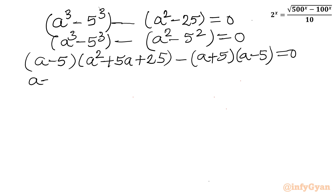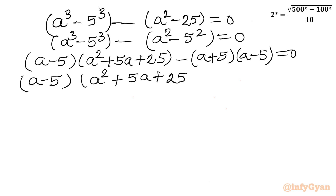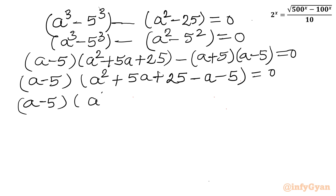Now I can see (a - 5) is overall common. Factoring it out: (a - 5)[(a^2 + 5a + 25) - (a + 5)] = 0, which simplifies to (a - 5)(a^2 + 4a + 20) = 0.